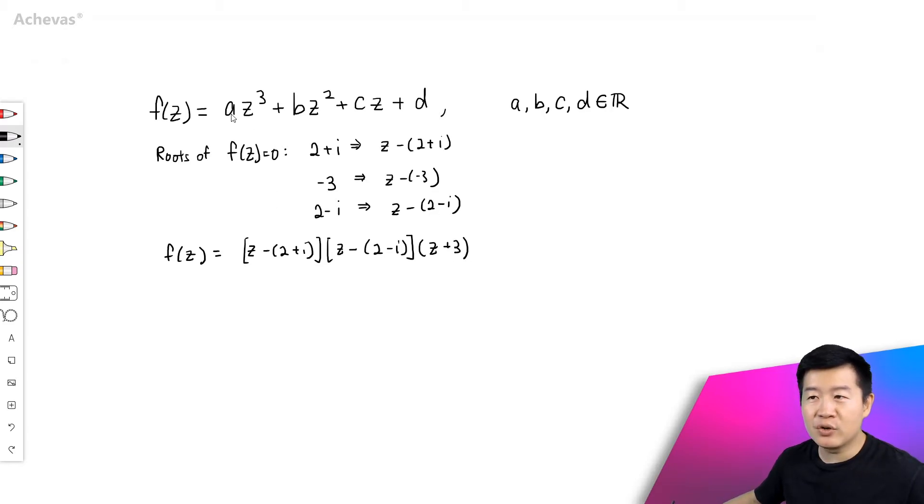And since the coefficient of z to the power of 3 is a, and if I were to express f(z) as this, we have just 1 for the coefficient of z to the power of 3, z times z times z. So I'm going to add an a in front so that we will get a coefficient of z to the power of 3 as a also to synchronize to what we have here.